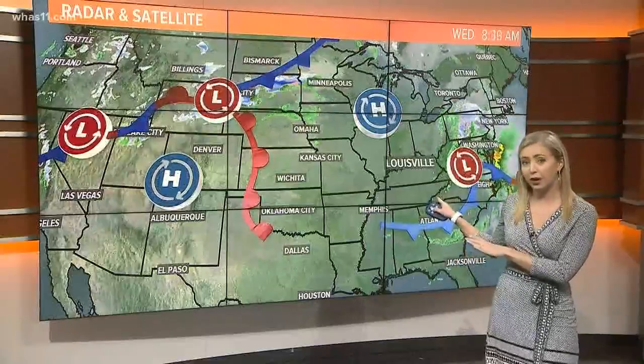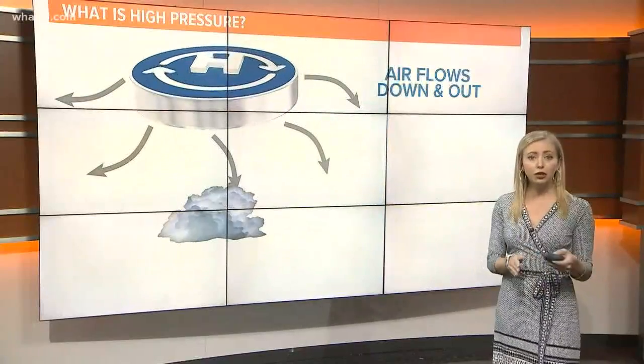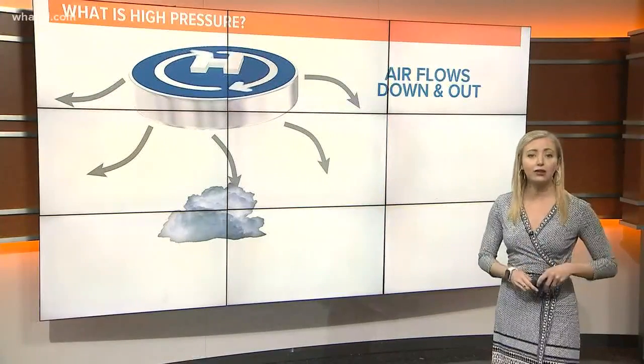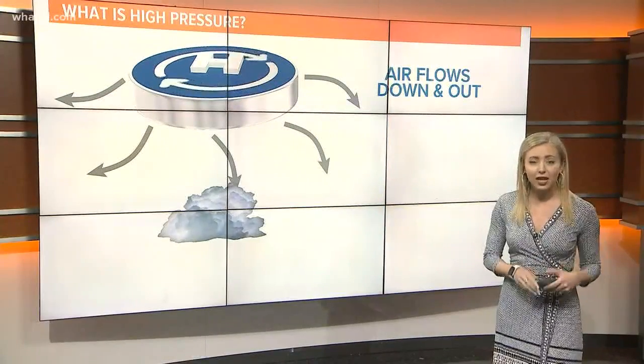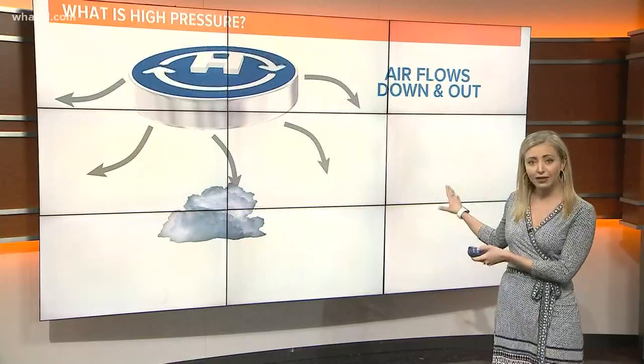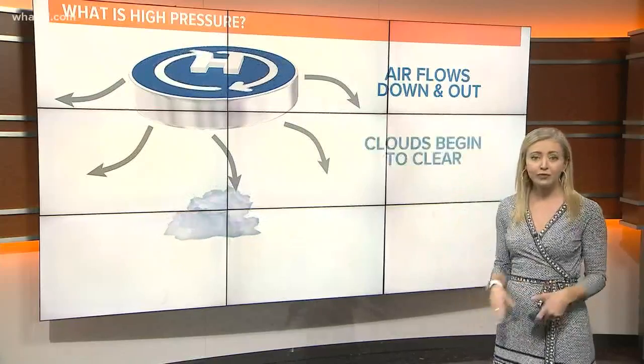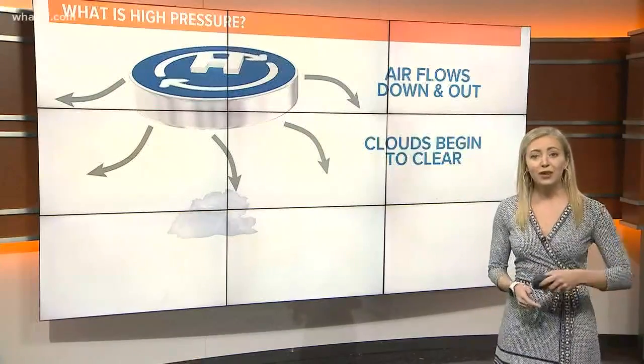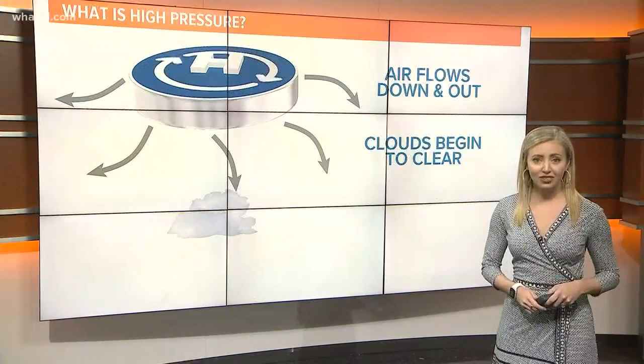Areas of low pressure tend to be associated with frontal boundaries, both warm and cold. So how do they work? Let's start with high pressure. In a high pressure system, air flows down and out of the center. This allows any cloud cover in the area to try and clear out, and that means we get to see more sunshine.